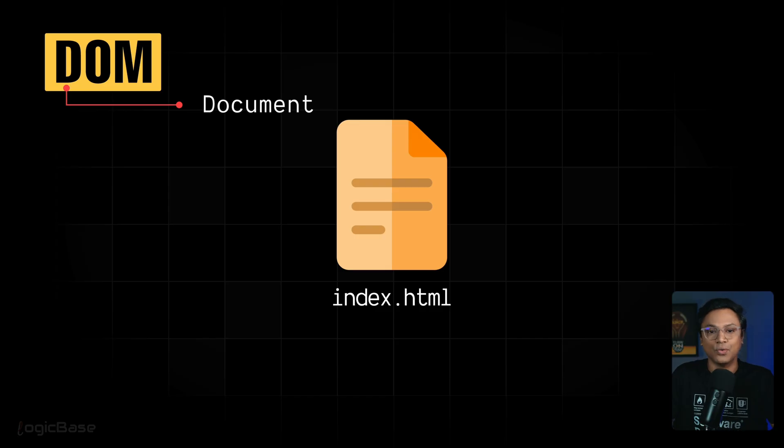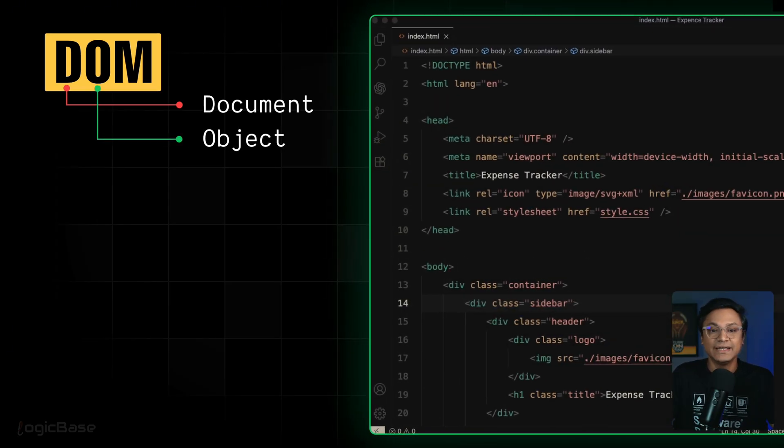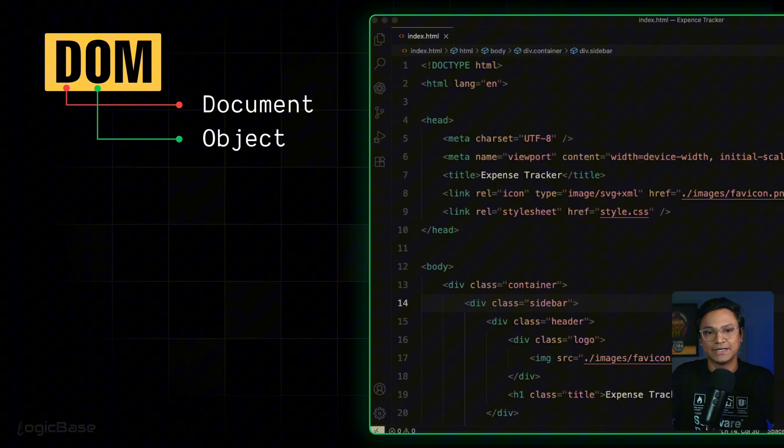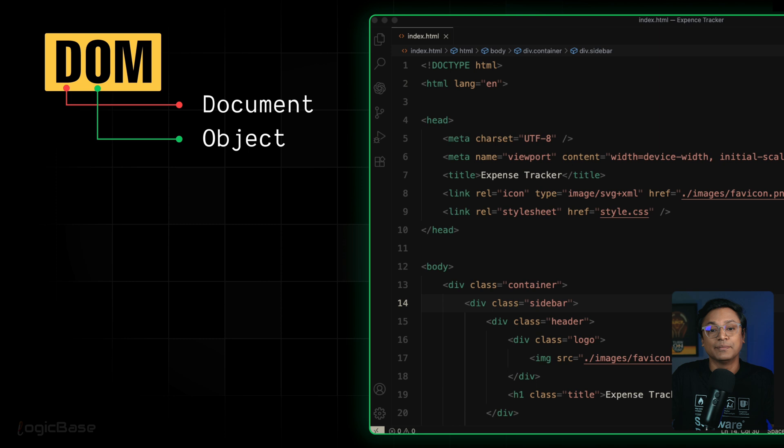Now comes the O, which stands for object. Let's take the index.html file I showed earlier. Inside that file, we write HTML code like this. That HTML code is made up of different HTML elements. So what do we call elements? For example, head, body, div, h1, p, all of these are HTML elements.